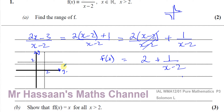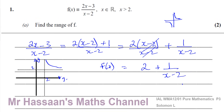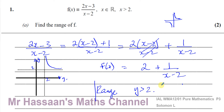If the question did not state that x is greater than 2, I would draw both branches of the function. For instance, when x = 0, y = 2 + (1/(0−2)) = 1.5, so it passes through the y-axis on the positive side. But because we are restricted to x values greater than 2, we only consider the branch above the asymptote. The graph comes from above and approaches y = 2. So the range of this function, as we can see from the diagram, is y > 2.